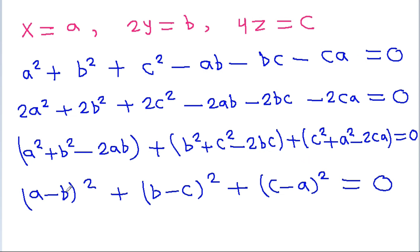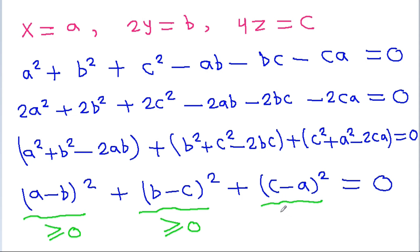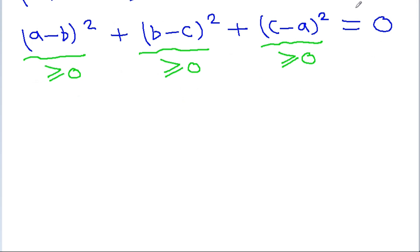We know that (a − b)² ≥ 0, (b − c)² ≥ 0, and (c − a)² ≥ 0. Since the sum of these three non-negative terms equals 0, each term must individually equal 0. Therefore a = b, b = c, and c = a.